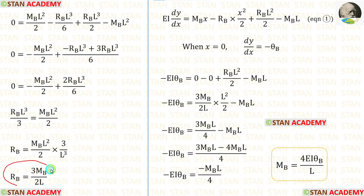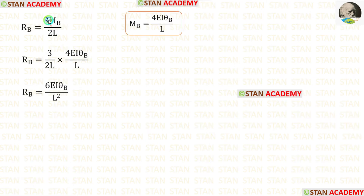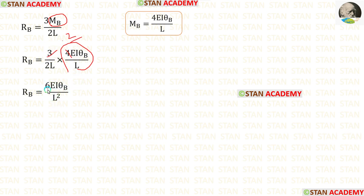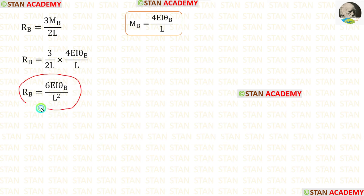Now, substituting the value of MB into the expression for RB, after applying the value of MB we can simplify: 3 × 2 gives 6, and L × L gives L². Finally, RB = 6EI·θB / L².